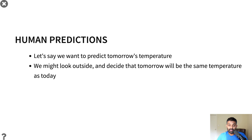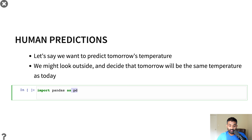Let's say we wanted to predict tomorrow's temperature. We might look outside and make a very simple rule — tomorrow's temperature is going to be the exact same as today's temperature. It's not a very complicated rule, but it actually works decently well. We'll import a Python library called pandas that helps us work with data, and load in a dataset of weather observations from November 20th to 26th, 2022. Each row is one day's worth of data, and the prediction column is our prediction for tomorrow's temperature.